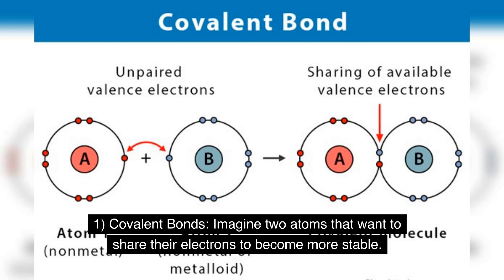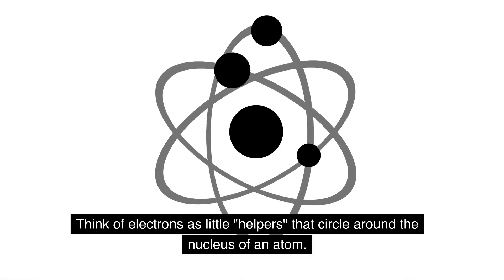Covalent bonds: Imagine two atoms that want to share their electrons to become more stable. Think of electrons as little helpers that circle around the nucleus of an atom.